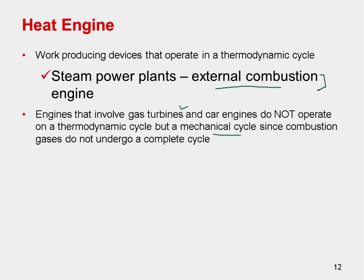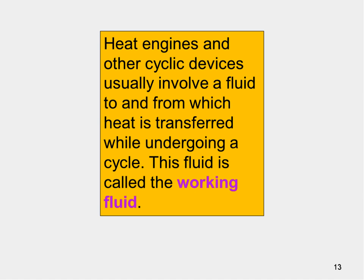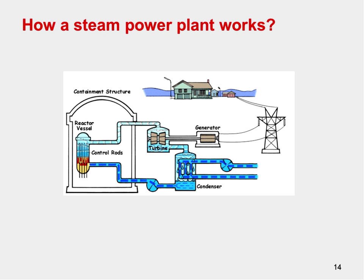In a thermodynamic cycle, you start and end at the same point, and properties like pressure, temperature, and enthalpy are the same at the beginning and end. Heat engines and other cyclic devices involve a fluid to and from which heat is transferred — this fluid is called the working fluid. In a steam power plant, the working fluid is water or steam. In an air conditioning system, the working fluid is refrigerant or Freon — that fluid is the one undergoing the cycle.